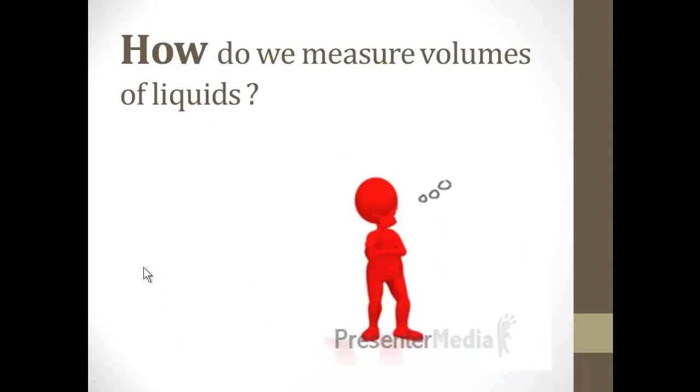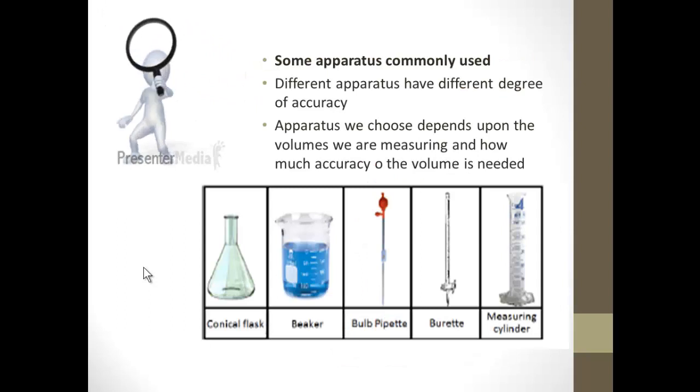Now how do we measure volumes of liquids? There are some apparatuses which are commonly used to measure the volume of liquids, such as conical flask, beaker, bulb pipette, burette, and measuring cylinder.